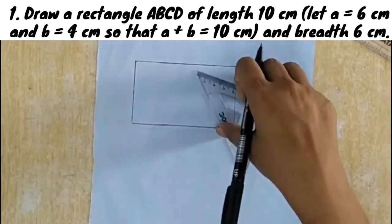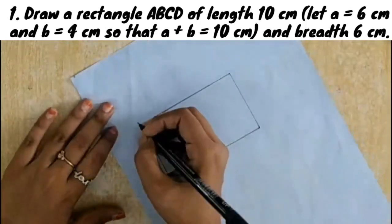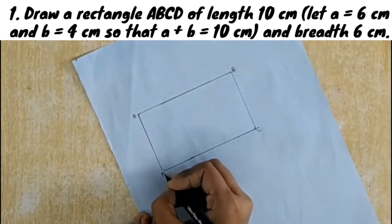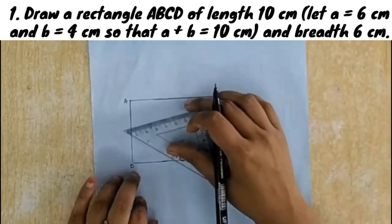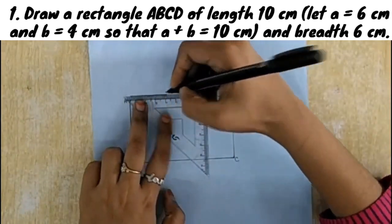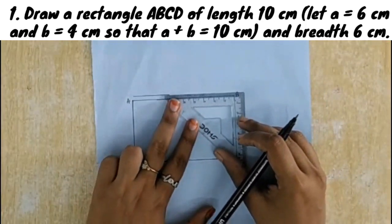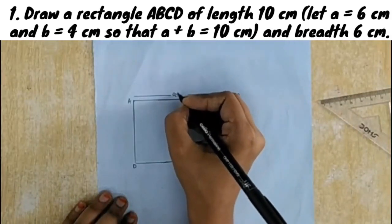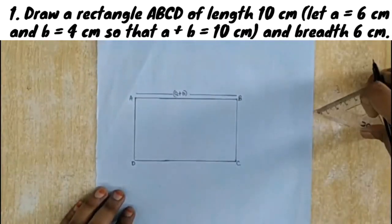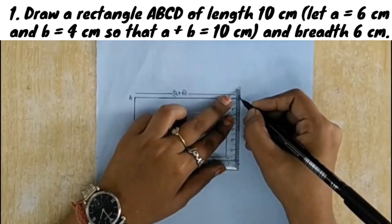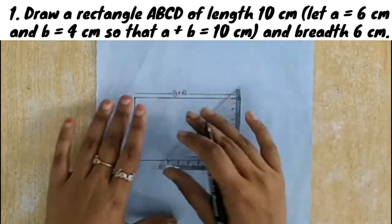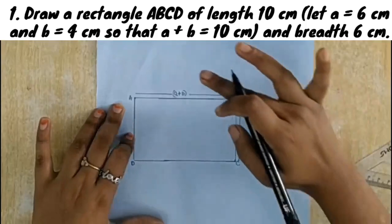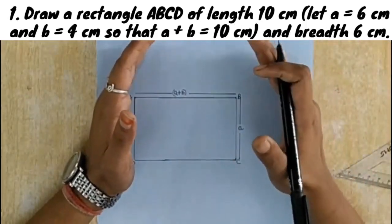We mark the vertices A, B, C, and D. The length will be A plus B, which equals 10 cm, and the breadth will be A, which is 6 cm. This completes our first step.